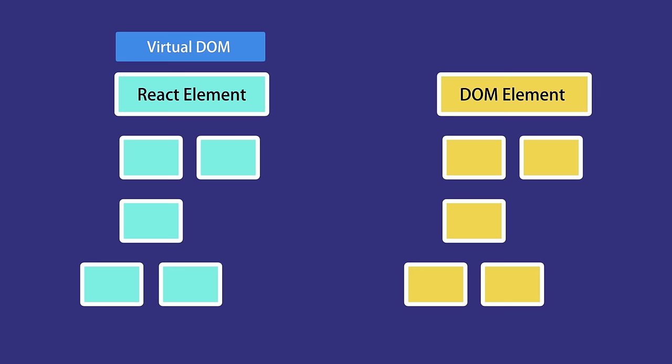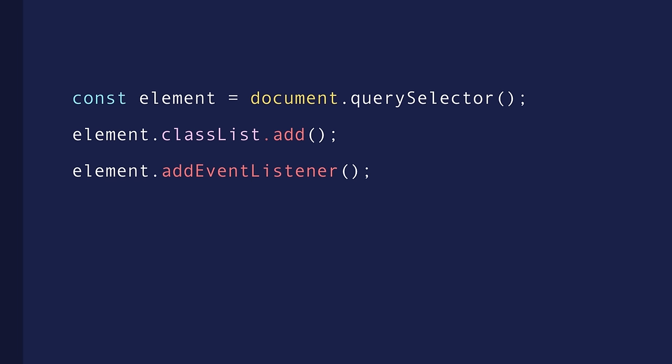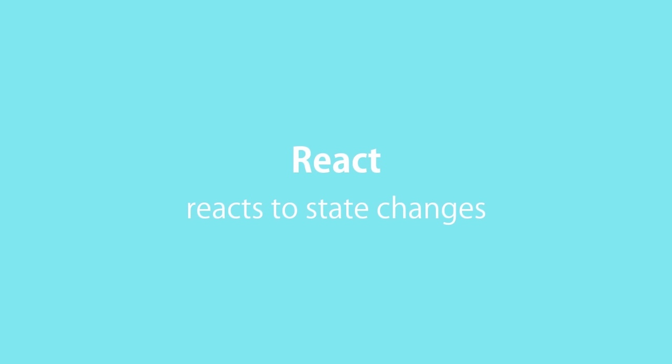Unlike the real DOM, the virtual DOM is cheap to create. When we change the state of a component, we get a new React element. React will compare this element and its children with the previous one, figure out what changed, and update the relevant part of the real DOM to keep it in sync with the virtual DOM. We no longer have to write code to query and manipulate the DOM or attach event handlers — we simply change the state of our components and React automatically updates the DOM to match. That's exactly why this library is called React.